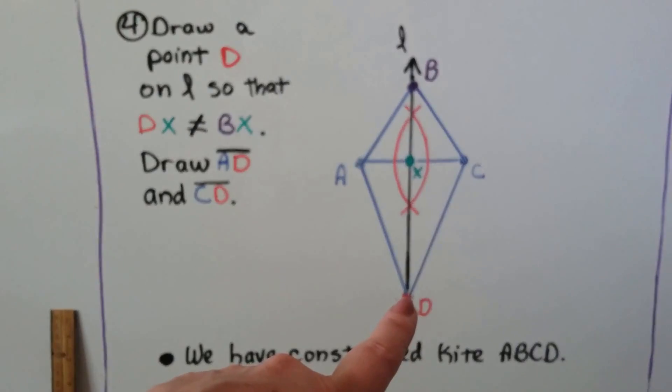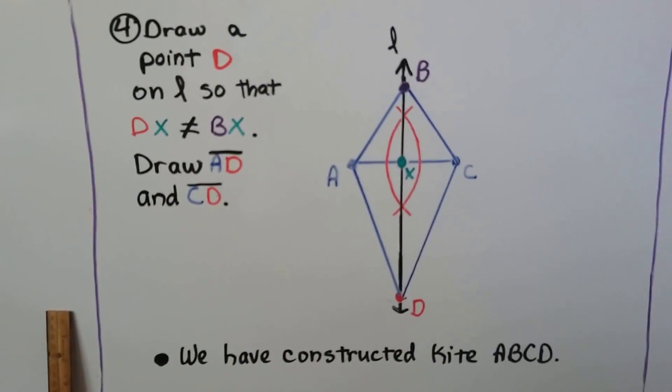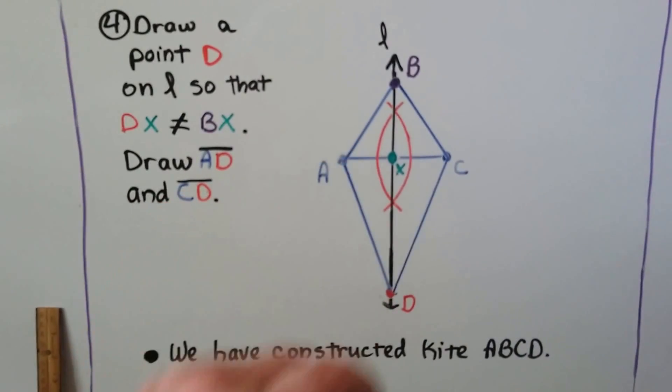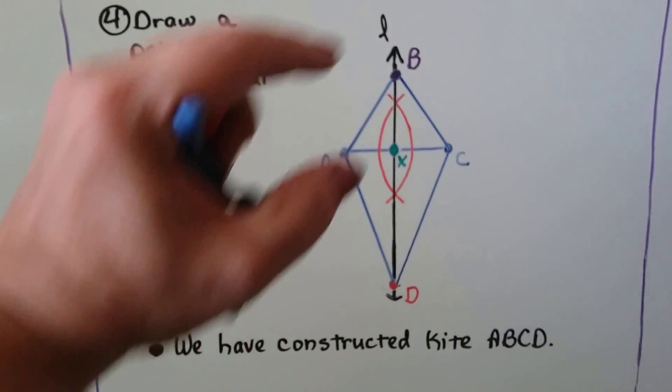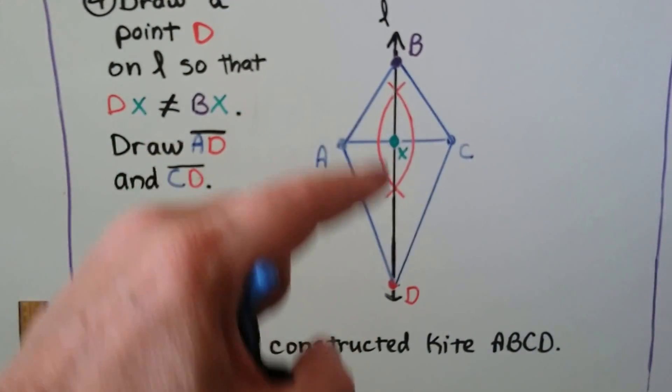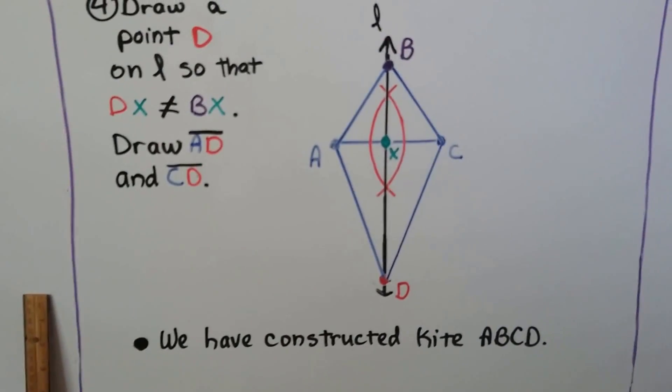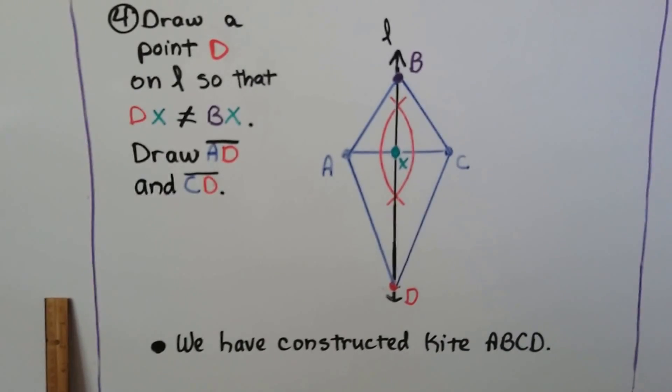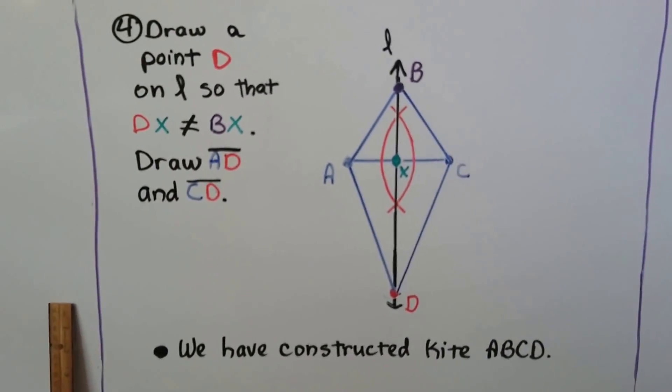And we're going to do it on L so that this DX segment here is not equal to the BX. We want them to be two different lengths. Then we draw AD and CD and we've constructed a kite, ABCD.